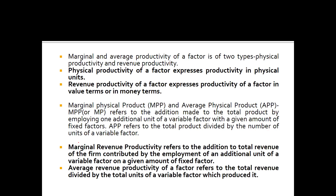Marginal and average productivity of a factor are of two types: physical productivity and revenue productivity. Physical productivity expresses a factor's productivity in physical units, while revenue productivity expresses it in value or money terms — how much revenue that particular commodity generates.